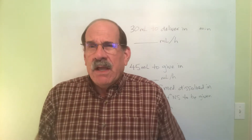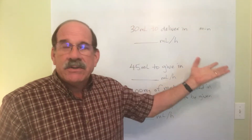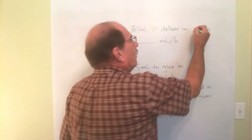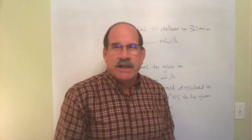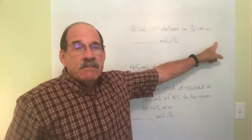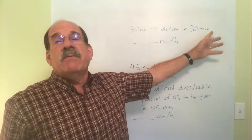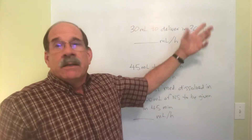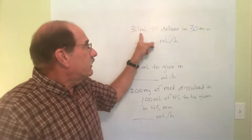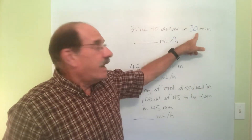From syringe pumps it's a small amount of medicine in liquid form over a fairly short time. For example, let's say we have 30 milliliters of some kind of medicine and we're going to deliver it over 30 minutes. This is less than one hour, so I'm not going to use the simple method of dividing milliliters by hours. Let's think this through first.